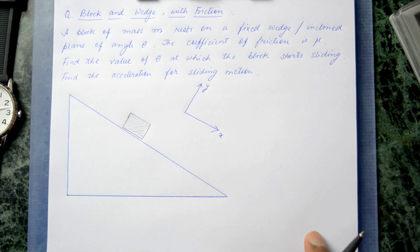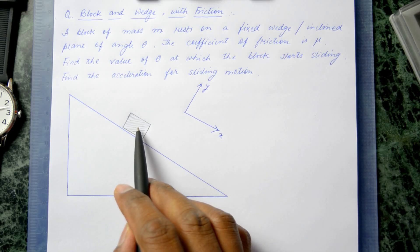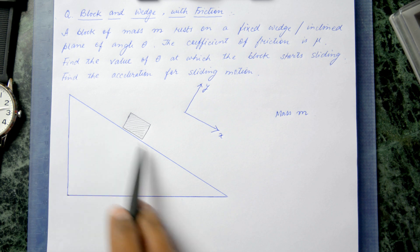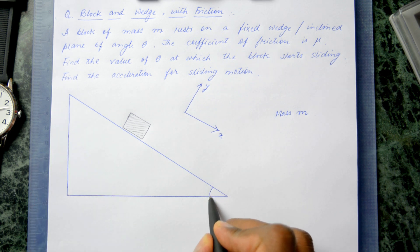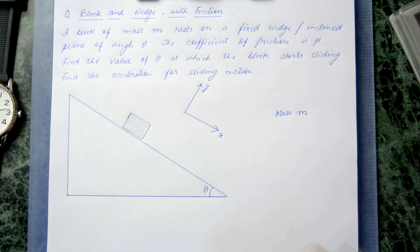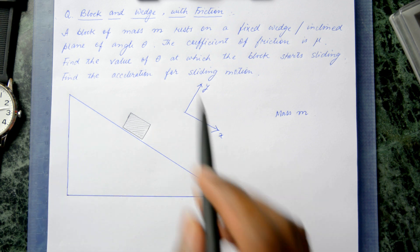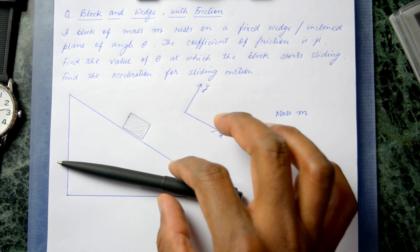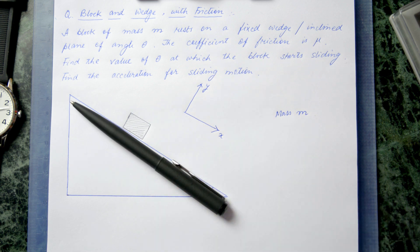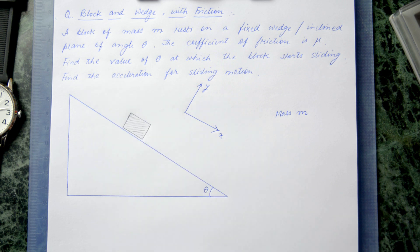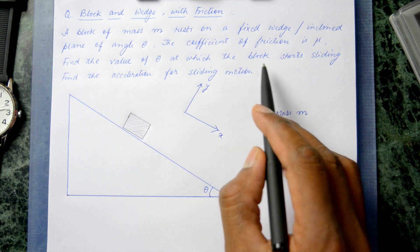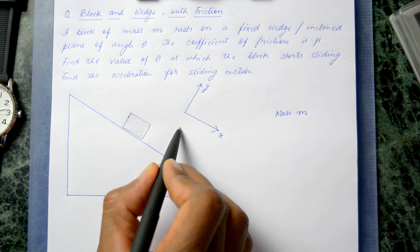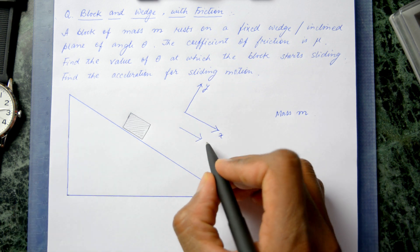We have a simple mechanical problem in which there is a block of mass m lying on top of an inclined plane with an inclination angle theta. The question asks: at what critical angle will the block start sliding downward? Find that critical angle, and once sliding happens, find the acceleration in the direction of motion.